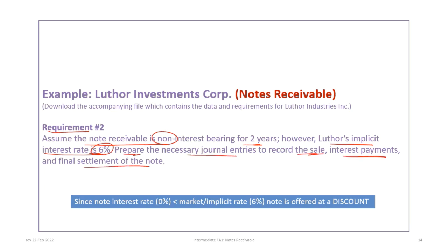It is also important to note that since the note interest rate (the face rate) is zero, that is less than the market or implicit rate, so this note is offered at a discount. We will see this occur over and over again in intermediate accounting when you have notes or bonds sold or issued at premiums or discounts.